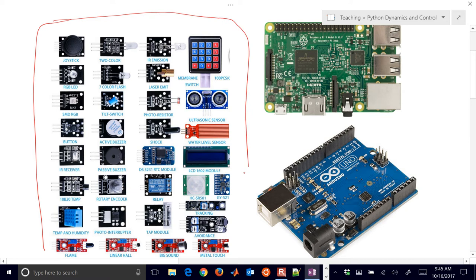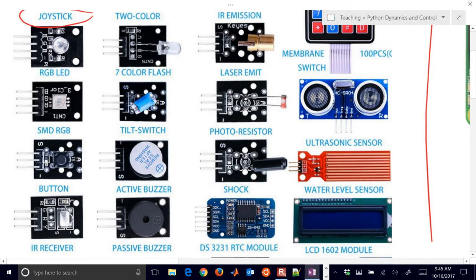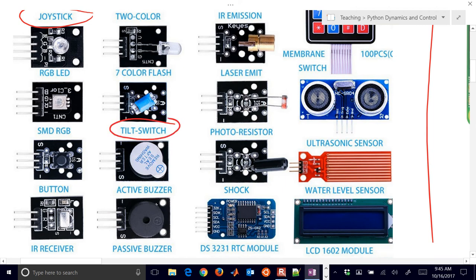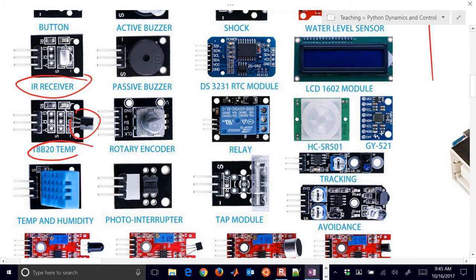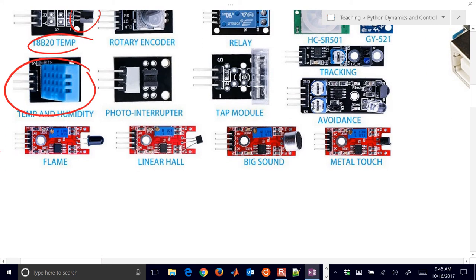For example, you'll have manual input like a joystick. You could have a switch, a tilt switch. You can have things like an IR receiver that receives infrared. You can have a temperature, a little temperature transistor right there, thermistor. You could also have others that sense the temperature and humidity. And again, others that will sense flame.